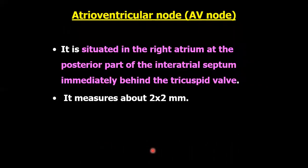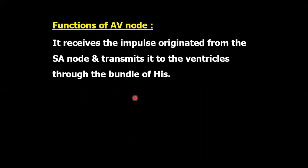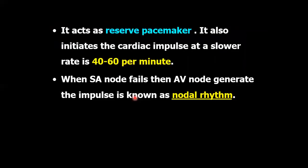Atrioventricular node: it is situated in the right atrium, at the posterior part of the inter-atrial septum, immediately behind the tricuspid valve. Functions: it receives the impulse originated from the SA node and transmits it to the ventricles through the bundle of His. It also acts as the reserve pacemaker — it initiates the cardiac impulse at a slower rate of 40 to 60 per minute. When the SA node fails, the AV node generates the impulse, which is known as nodal rhythm.